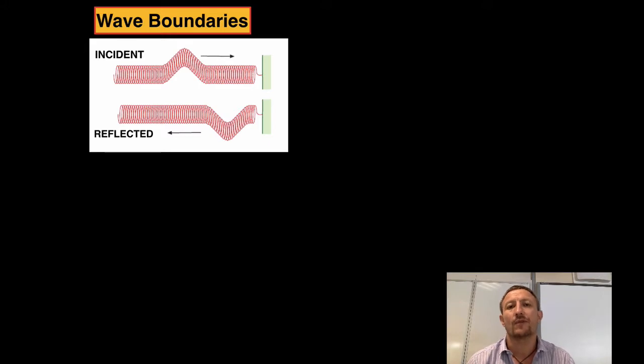Now that's really important for our next unit when we look at superposition because sometimes when we have continuous waves where we've got waves continually coming along and then hitting, the reflected wave will have an effect of interacting with the incident wave and they are going to combine together in a specific way.